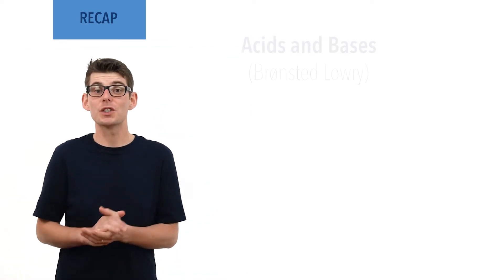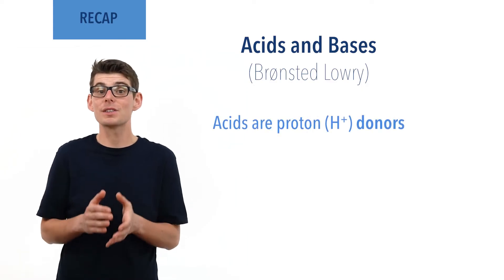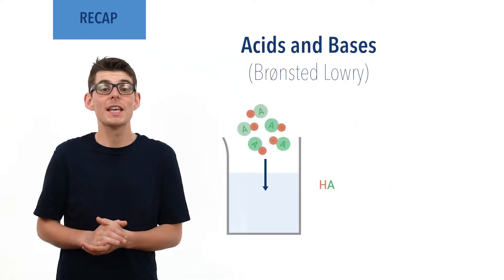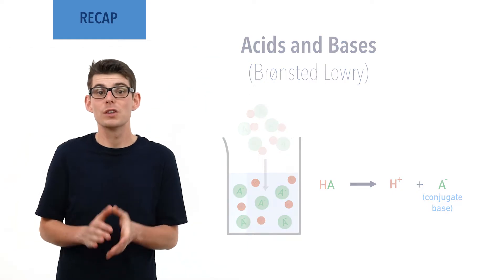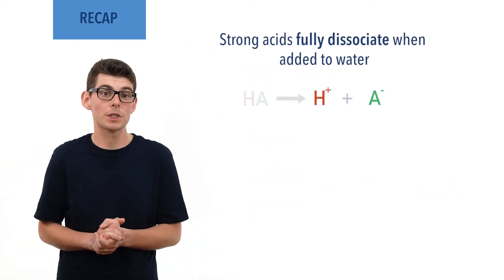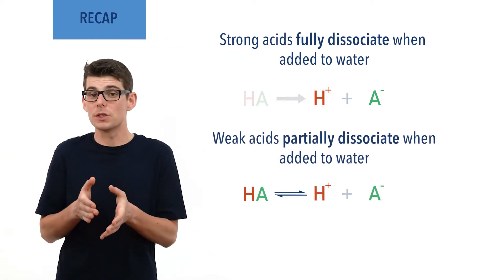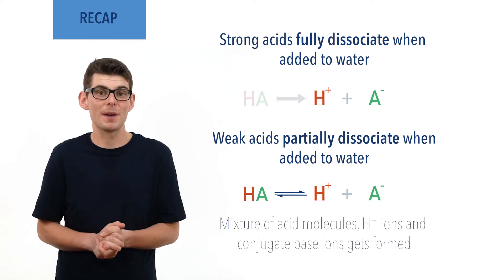Before we talk in detail about the ionic product of water, there are a few essential ideas you need to be comfortable with. According to the Bronsted-Lowry definition, acids are proton donors and bases are proton acceptors. Acids dissociate and split apart into H plus ions and their conjugate base when added to water. Strong acids fully dissociate and weak acids partially dissociate, forming a solution containing molecules of the acid, H plus ions, and conjugate base ions.